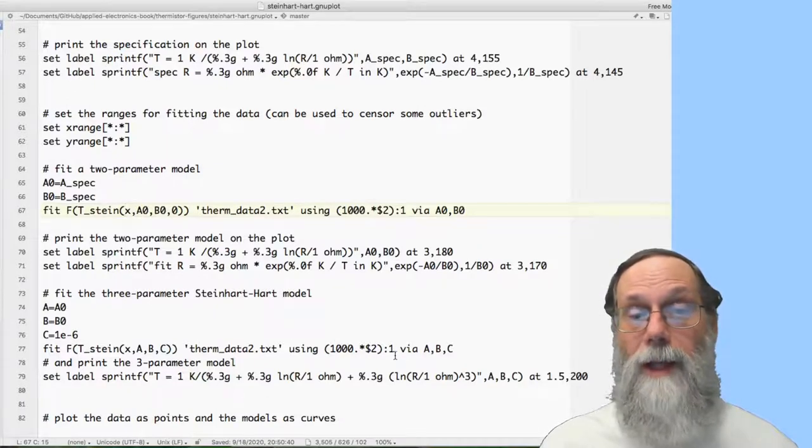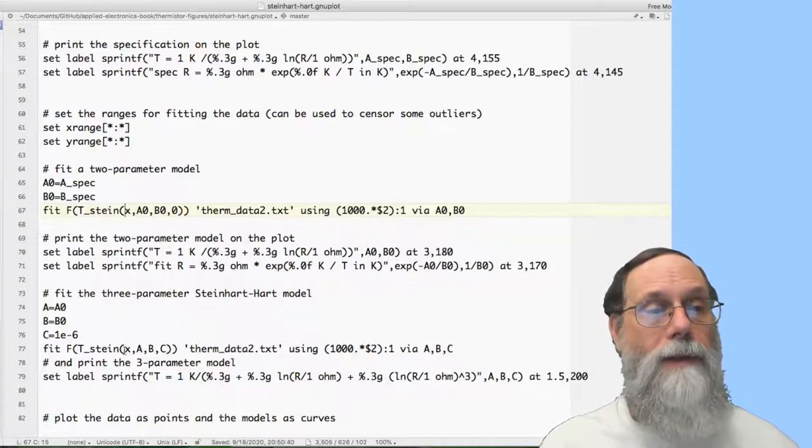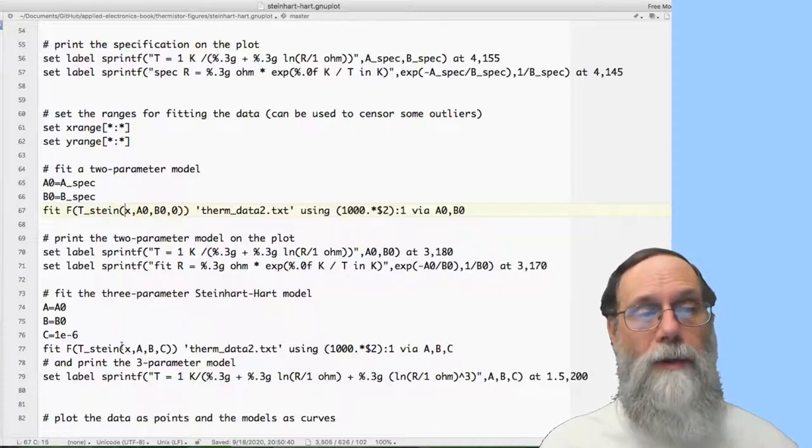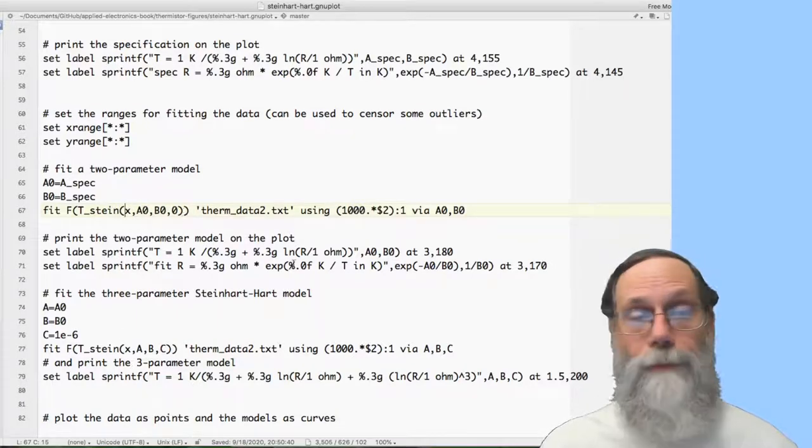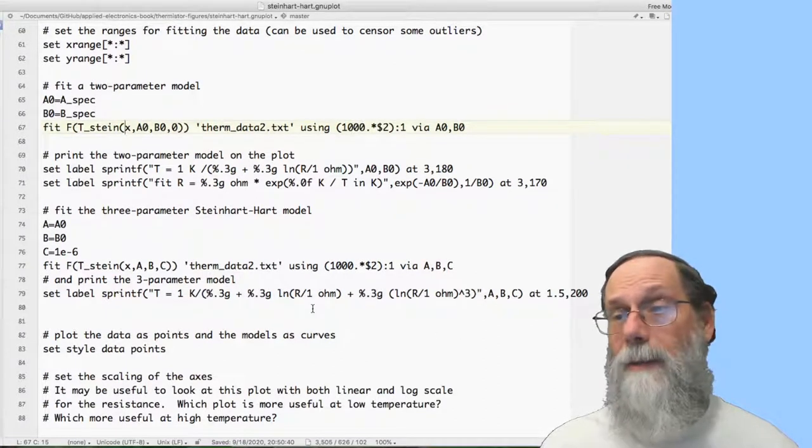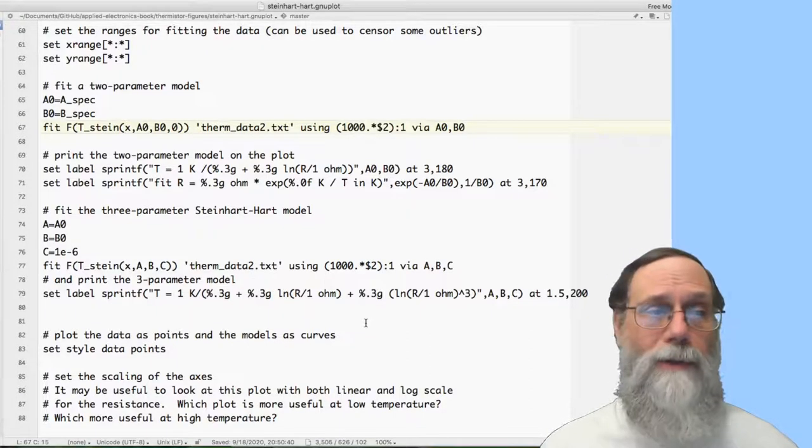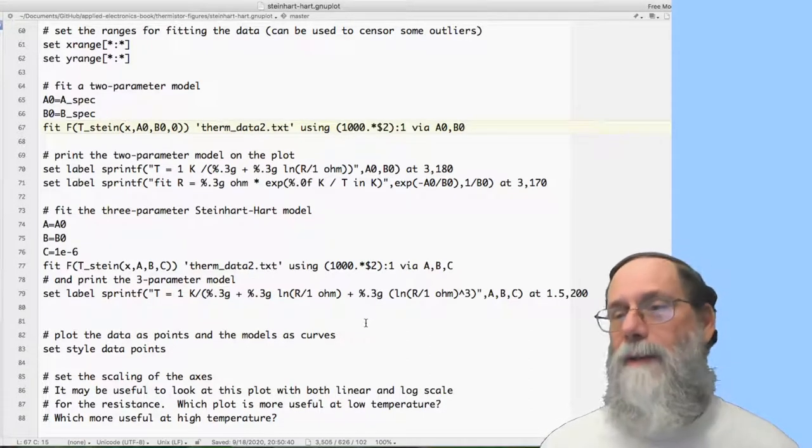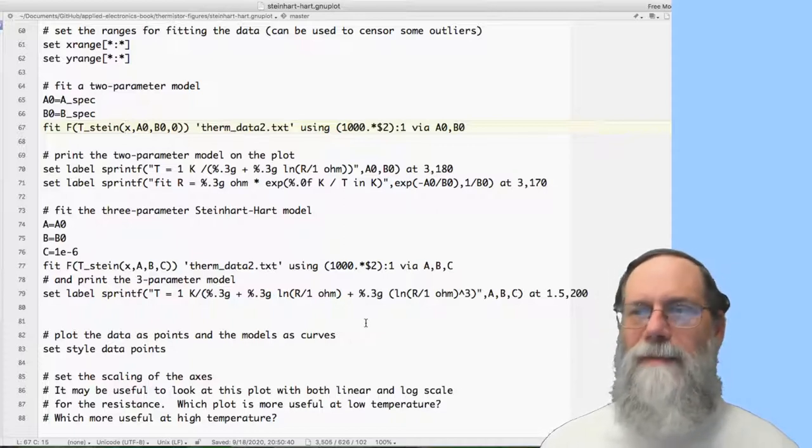So that looks exactly the same. But now I'm fitting it via a, b, and c. And notice that the t-stein equation gets used, that function gets used over and over again, but with different parameter values. And then I can print out the three-parameter model. And here I've only got a single label for this because it's kind of hard to turn this model around to print resistance as a function of temperature because it's a cubic model. It's things that are a little bit messier. And so I didn't even attempt it.